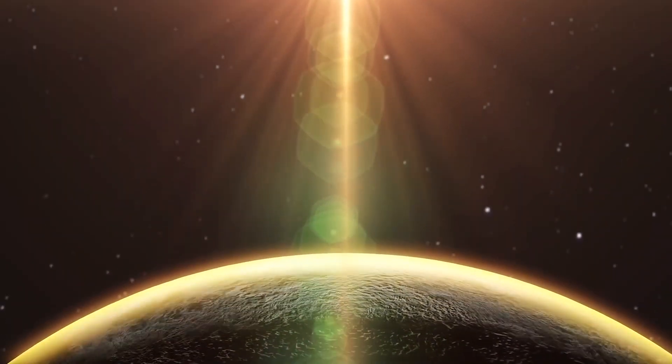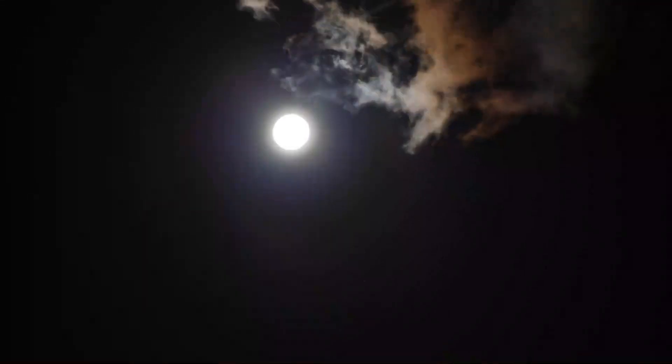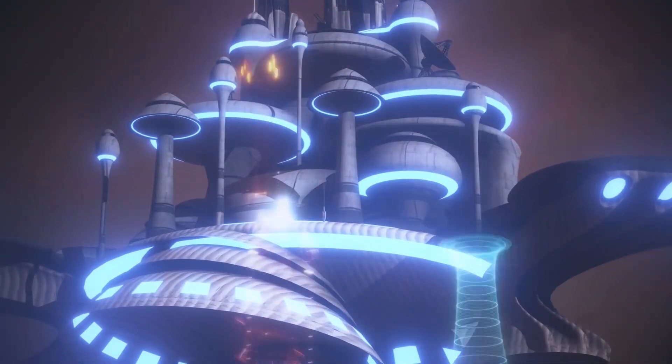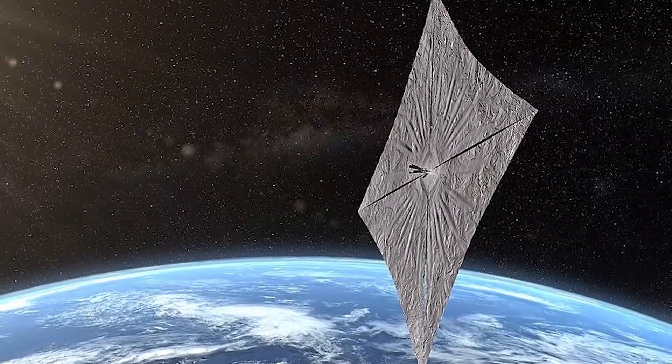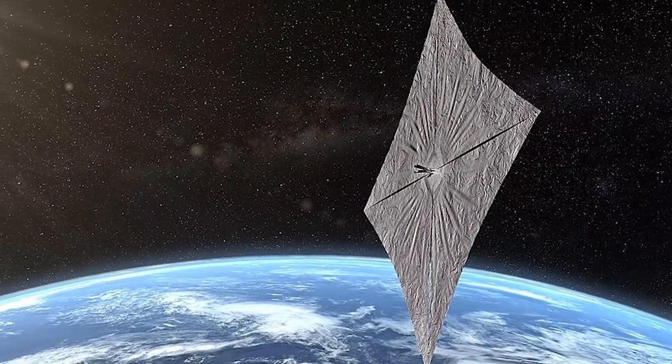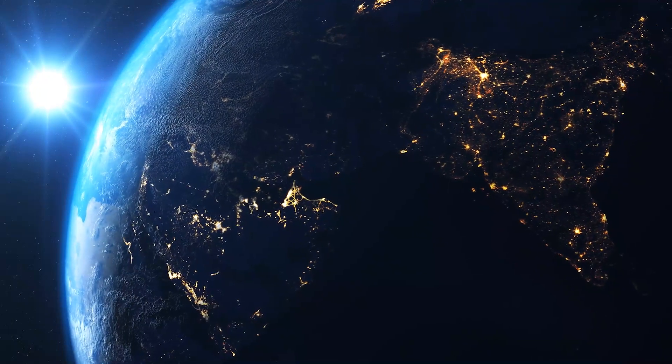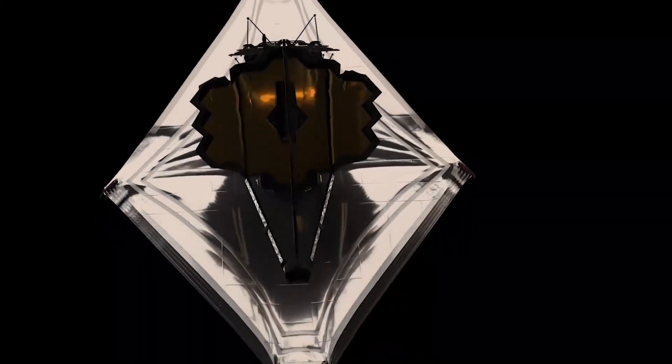But the problem is, Proxima b is tidally locked, and as it has a permanent day and night side, if there were to be any civilization over there, they may have to illuminate the night side using mirrors, launched into orbit, or placed at strategic points. In that case, the light shining onto the permanent night side should be extremely powerful, and thus more likely to be detected with the JWST.